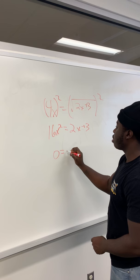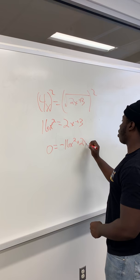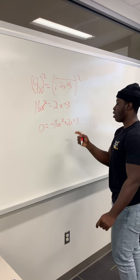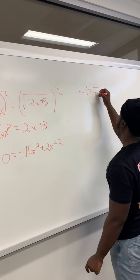Now to solve it you have to bring over the 16, so then it will be 0 equals negative 16x squared plus 2x plus 3. To solve this you need the quadratic formula.